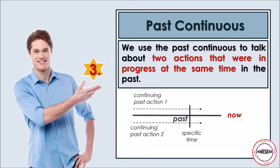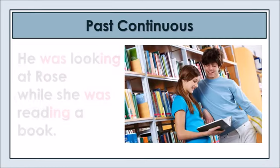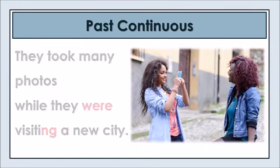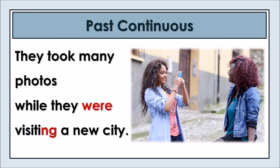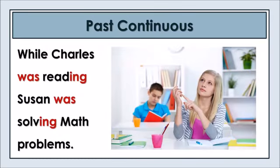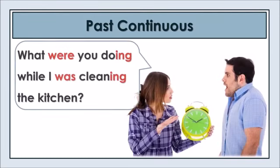We use the past continuous to talk about two actions that were in progress at the same time in the past. He was looking at Rose while she was reading a book. They took many photos while they were visiting a new city. While Charles was reading, Susan was solving math problems. What were you doing while I was cleaning the kitchen?